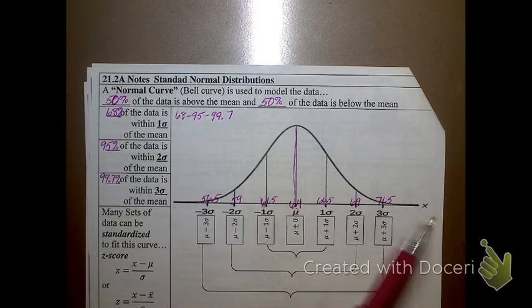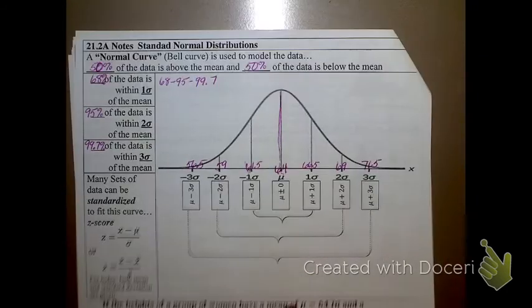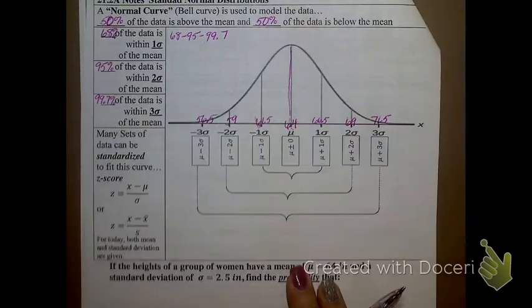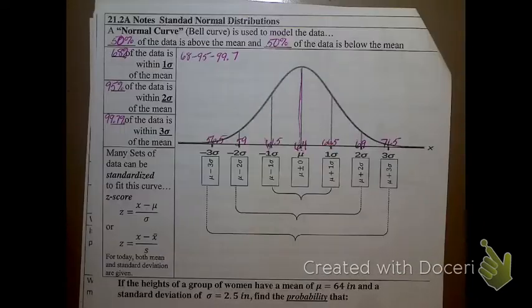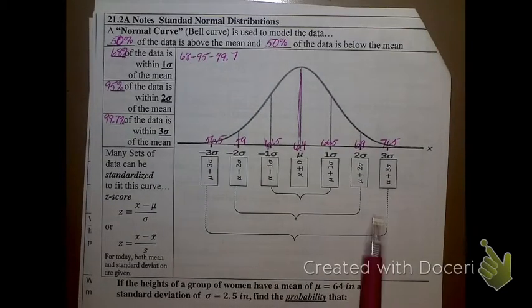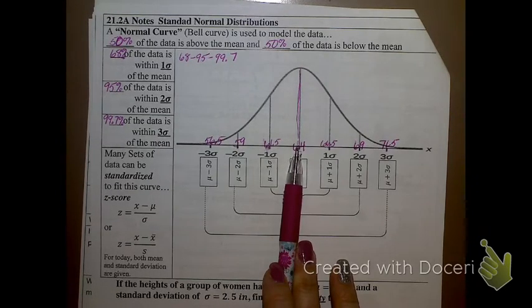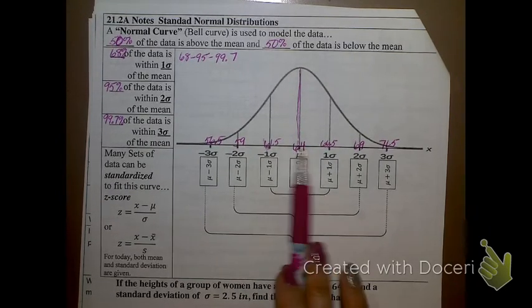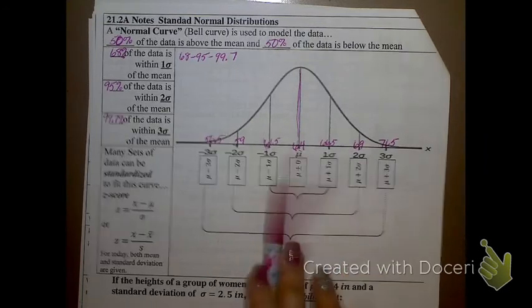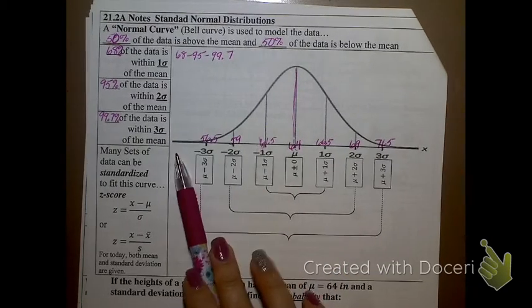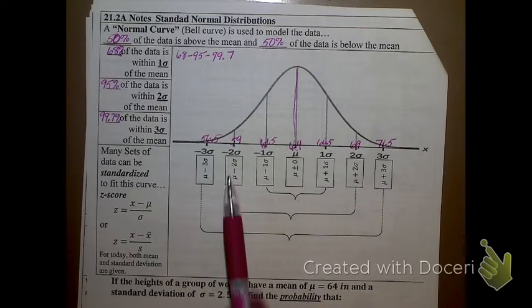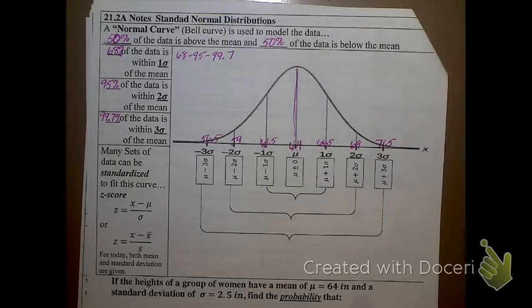Now, again, these numbers are particular to this example down here. The numbers will change. If I said the mean was 100, you're going to have 100 right there. And I would tell you the standard deviation is 10. In which case, you would add 10 three times to the right and subtract it three times to the left. And that's how you would get those numbers down there. Does that kind of make sense? So, that's going to change from problem to problem. Now, let me tell you what is not going to change from problem to problem.